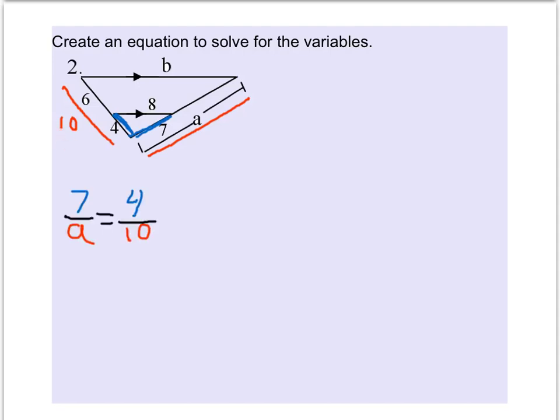When you cross multiply, we have 4 times a is equal to 7 times 10. And 7 times 10, of course, is 70. And then we'll divide both sides by 4, and that reduces to the fraction a is 35 halves. So there's a.